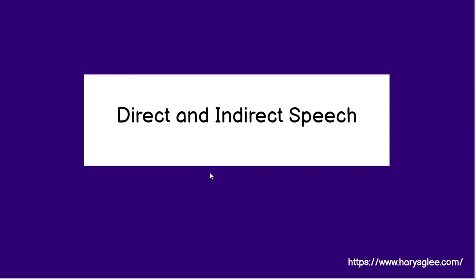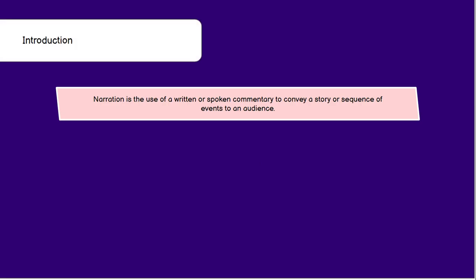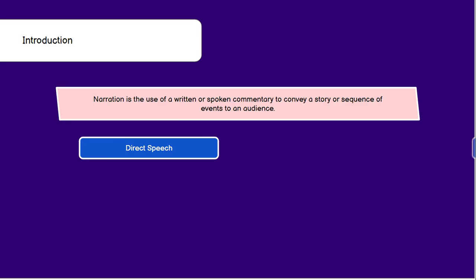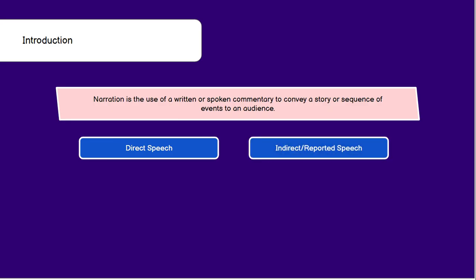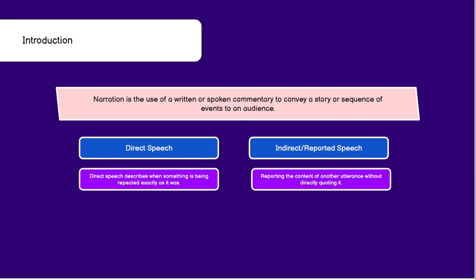Direct and Indirect Speech. Narration is the use of written or spoken commentary to convey a story or a sequence of events to an audience. There are two types of narration: direct speech and indirect speech. Indirect speech is also known as reported speech. Direct speech describes when something is being repeated exactly as it was, and indirect speech or reported speech is reporting the content of another utterance without directly quoting it.